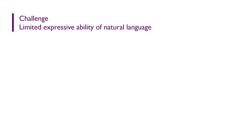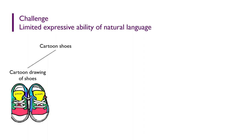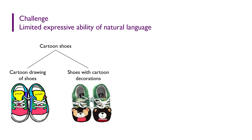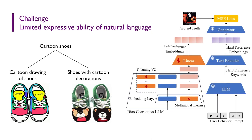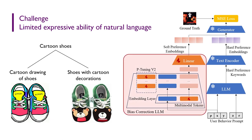The main challenge is that representing user preferences as natural language may not be accurate because they have limited expressive ability, whereas user preferences are abstract. For example, when generating cartoon shoes, the generator has no idea of generating cartoon drawings of shoes or shoes with cartoon decorations. To address this, we propose to generate implicit embeddings via a trainable bias correction LLM to better capture user preferences.